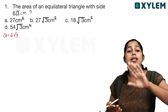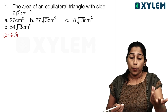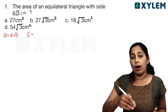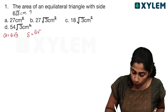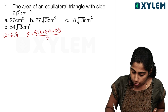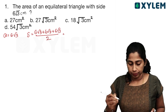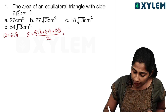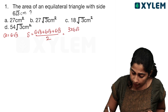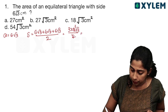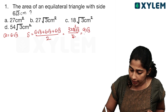All sides are equal. S is the semi-perimeter, which is half of the perimeter. That is 6√3 plus 6√3 plus 6√3, divided by 2. This gives us 3 into 6√3 divided by 2, and that is 9√3. So now we have S equal to 9√3.